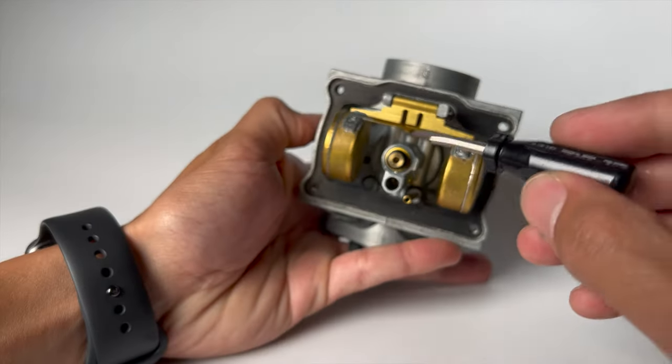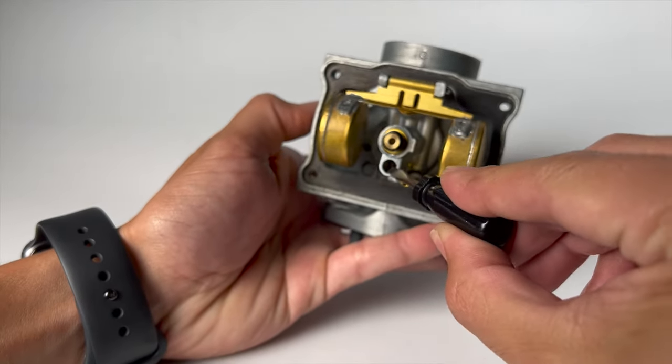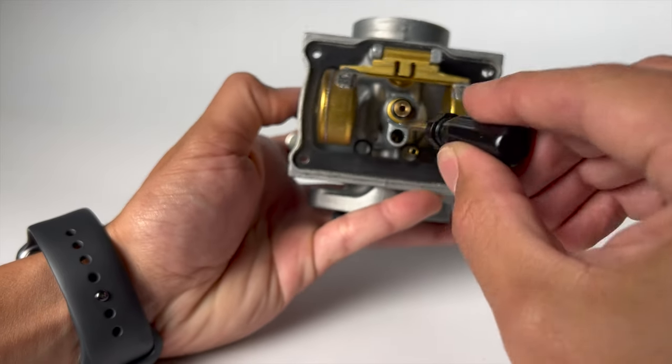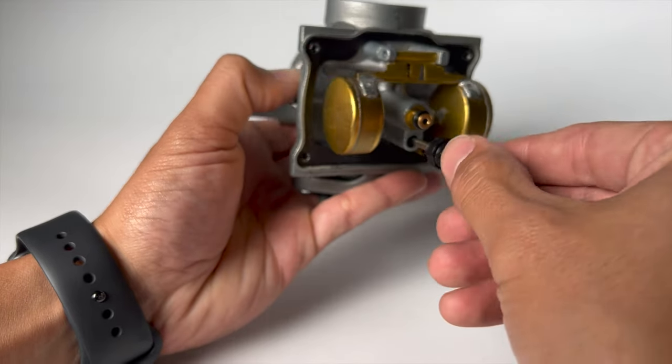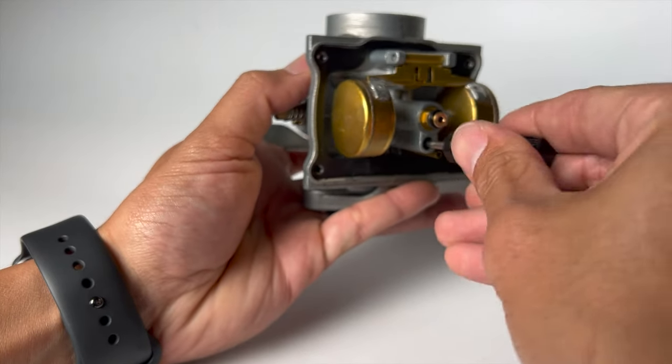And your pilot jet is going to be right down inside this bottom hole. Take a small flathead screwdriver and gently back it out.